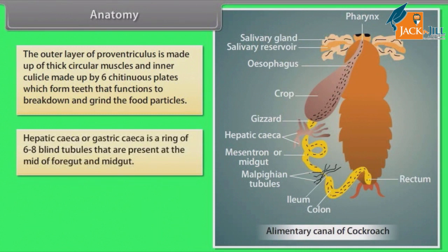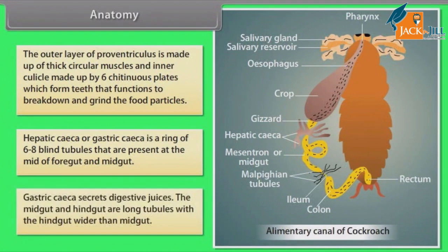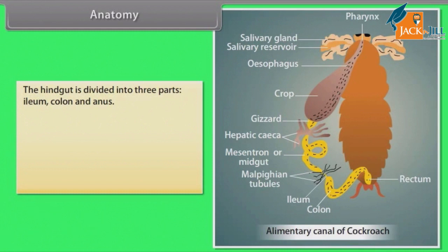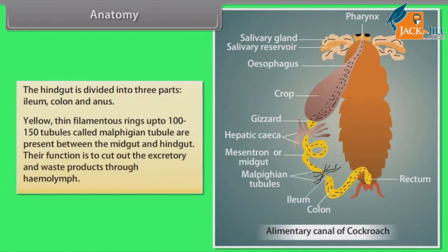Hepatic caeca or gastric caeca is a ring of six to eight blind tubules present at the junction of the foregut and midgut. Gastric caeca secretes digestive juices. The midgut and hindgut are long tubules, with the hindgut wider than the midgut. The hindgut is divided into three parts: ileum, colon, and anus. Yellow, thin, filamentous tubules called Malpighian tubules are present between the midgut and hindgut. Their function is to remove excretory waste products through the hemolymph.